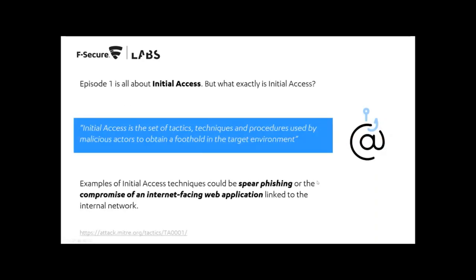Episode one: initial access. The MITRE ATT&CK tactic refers to it as a set of TTPs used by malicious actors to obtain a foothold in the target environment. If you look down that column in the MITRE ATT&CK navigator, you'll see everything from spear phishing with attachments and links through to compromising internet-facing assets — things like Citrix and VPN clients that had vulnerabilities allowing attackers to get a foothold. For the purposes of this exercise, we're focusing specifically on malicious documents.